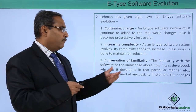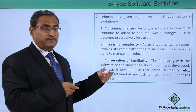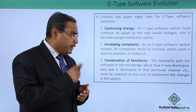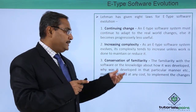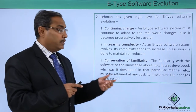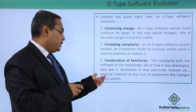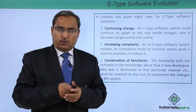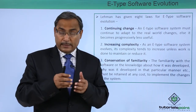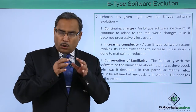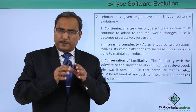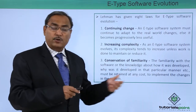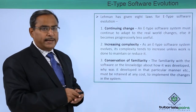The third law is conservation of familiarity. The familiarity with the software — the knowledge about how it was developed and why it was developed in that particular manner — must be retained at any cost to implement changes in the software in the coming days. All knowledge about why and how the software was developed must be kept and stored, so that this conservation of familiarity will be available to execute any kind of change request.